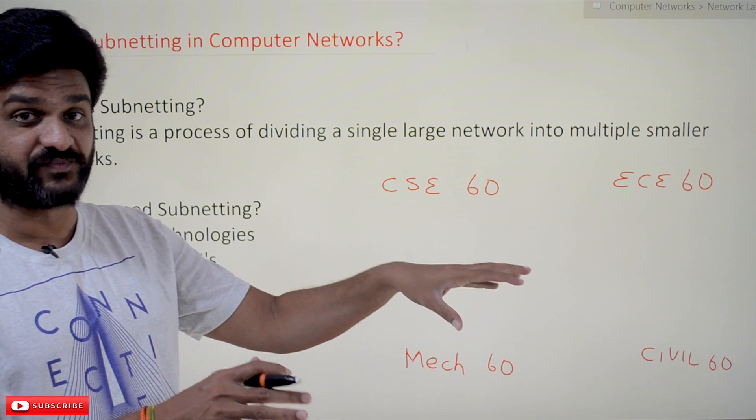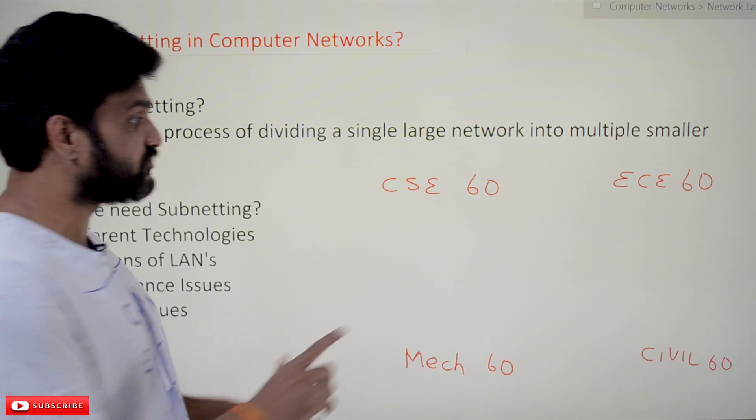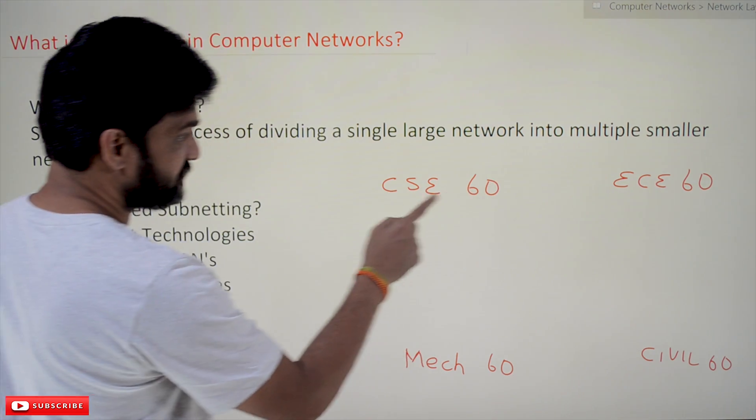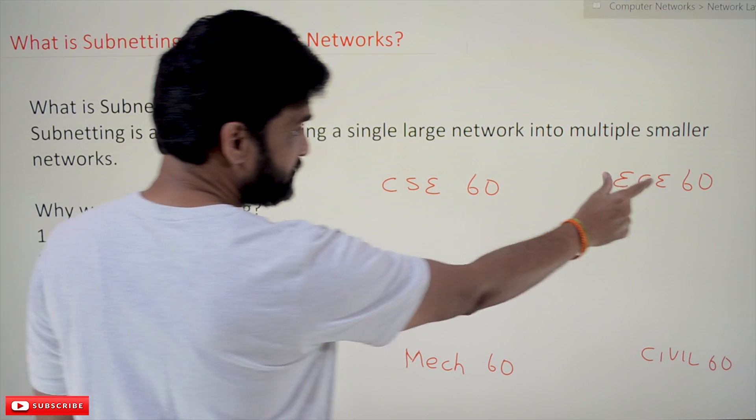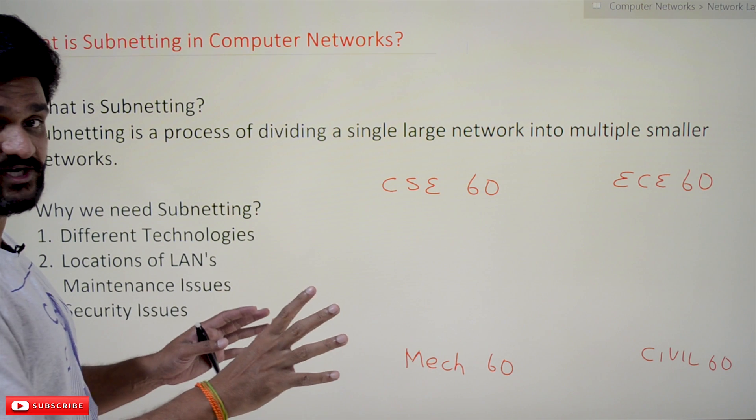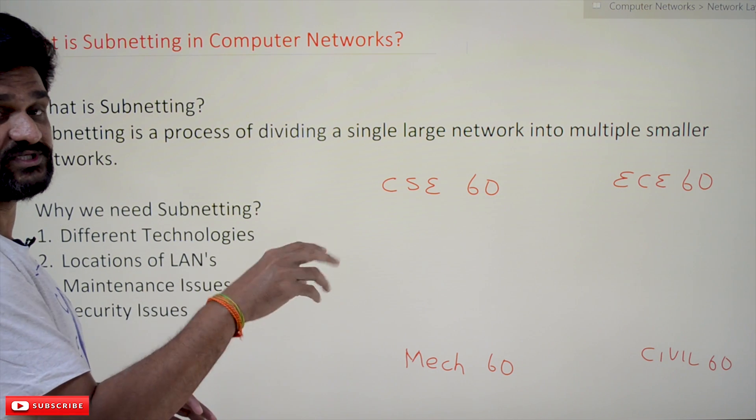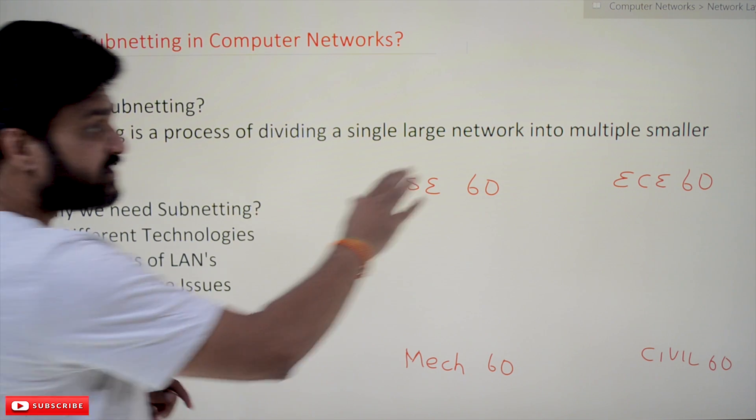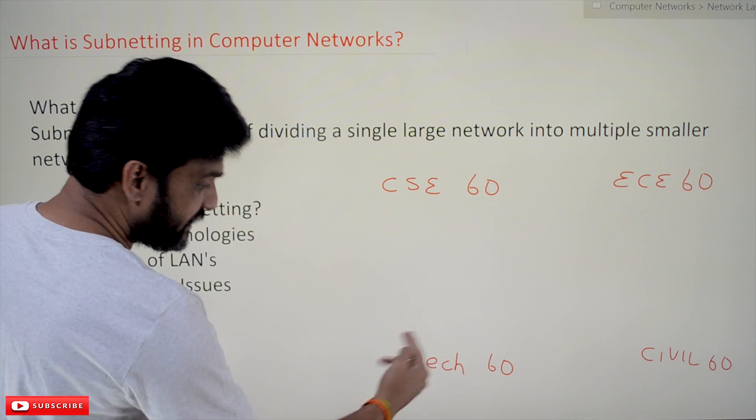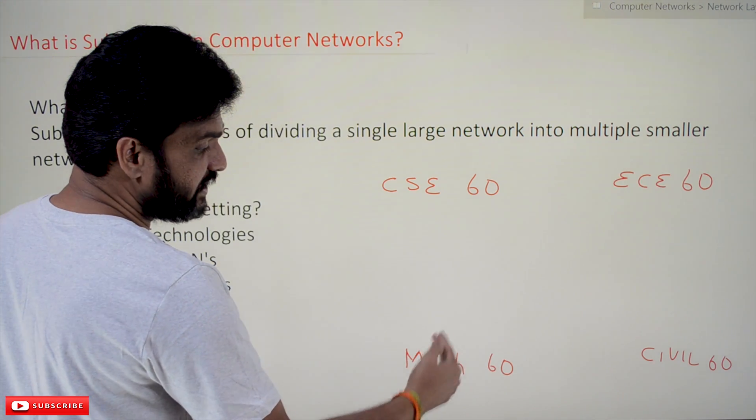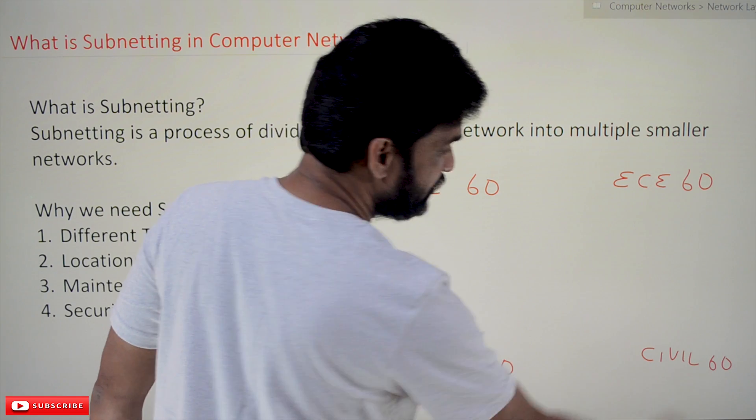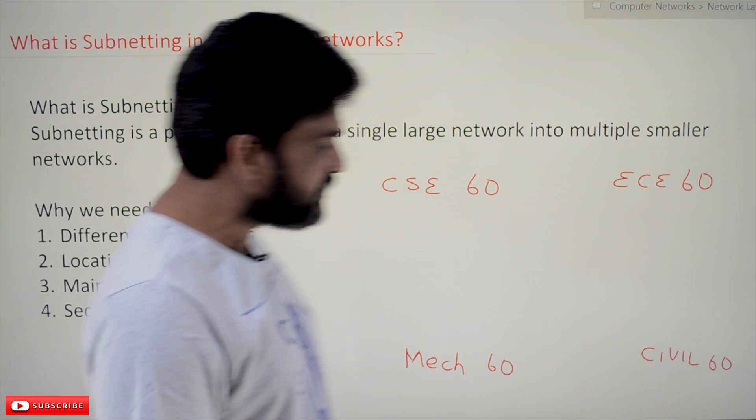Let's consider a university with these departments. CSE wants to connect 60 systems. ECE wants to connect 60 different hosts. Mechanical wants to construct a lab with 60 hosts, and Civil also wants to construct a lab with 60 systems. In this case of establishing labs for these departments, what are the different challenges that we are going to face?